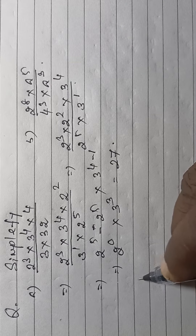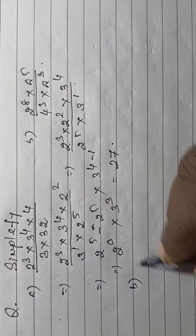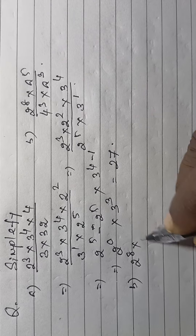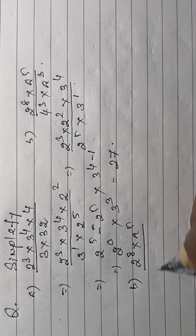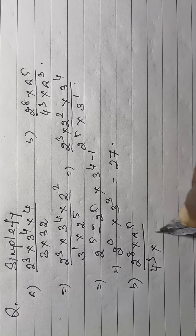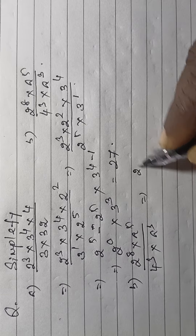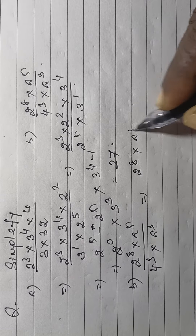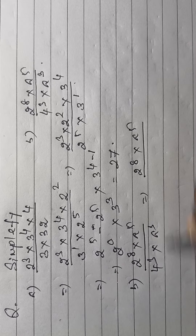Then the second part is here. Part B: 2 to the power 8, into a to the power 5, divided by 4 to the power 3, into a to the power 3.